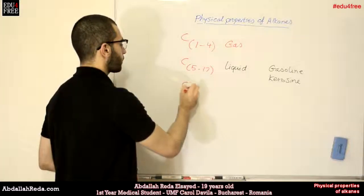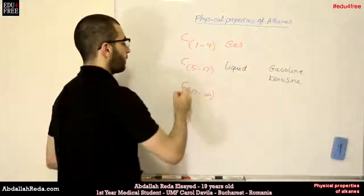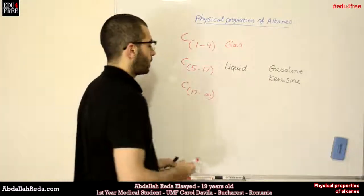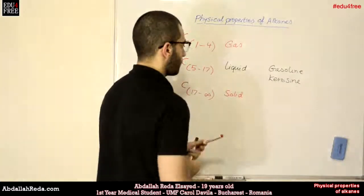And finally, from 17 to infinity, these alkanes are found in a solid form such as paraffin wax.